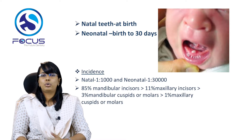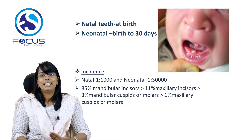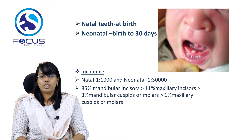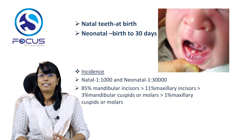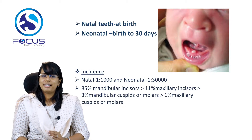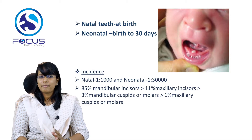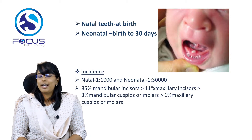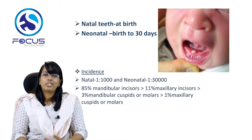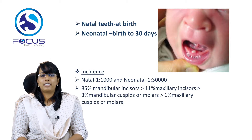Although the first primary tooth normally erupts within six months, in some cases a tooth may erupt during the gum pad stage at an earlier age. A natal tooth is present at the time of birth; a neonatal tooth is present from birth through the first 30 days of life. The incidence of a natal tooth is 1:1000 and neonatal tooth is 1:30,000. The most commonly seen natal tooth is the mandibular incisor, followed by maxillary incisors, then mandibular cuspids, molars, and maxillary cuspids and molars.